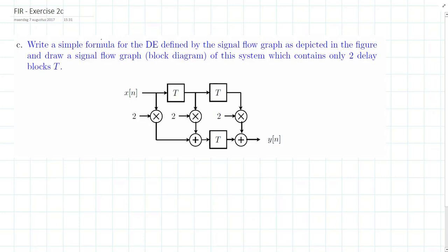Welcome to the Panopto video of exercise 2c of the module FIR filters. Write a simple formula for the difference equation defined by the signal flow graph as depicted in the figure and draw a signal flow graph of the system which contains only two delay blocks.